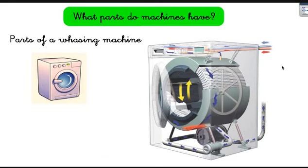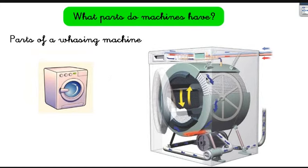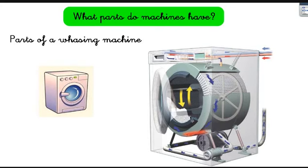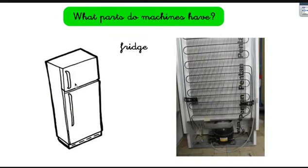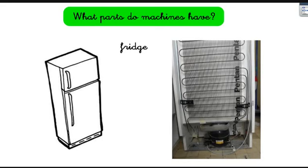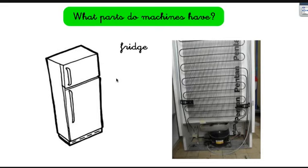I want to show you more parts of different machines. This is a washing machine, and here you can see all the parts inside it — the engine, lots of tubes, lots of cables. Many, many parts. And if you look at the back of the fridge, you can see many parts too — a lot of cables, the engine, everything that makes the fridge work. Because it's a machine and a complex thing, it has many, many parts.